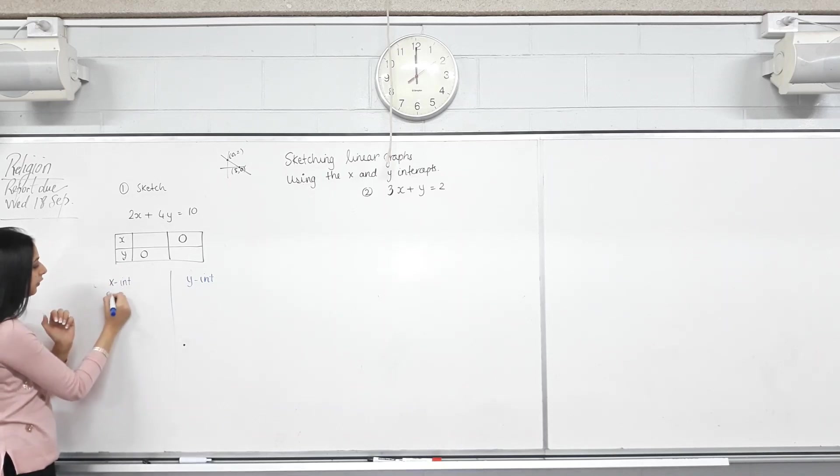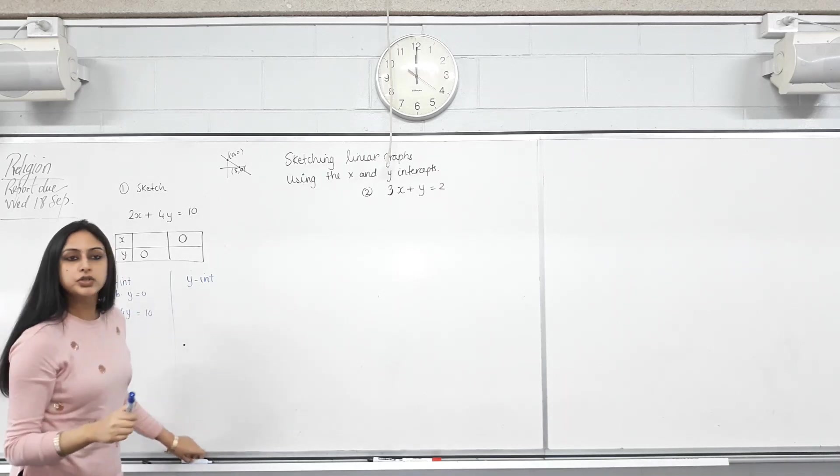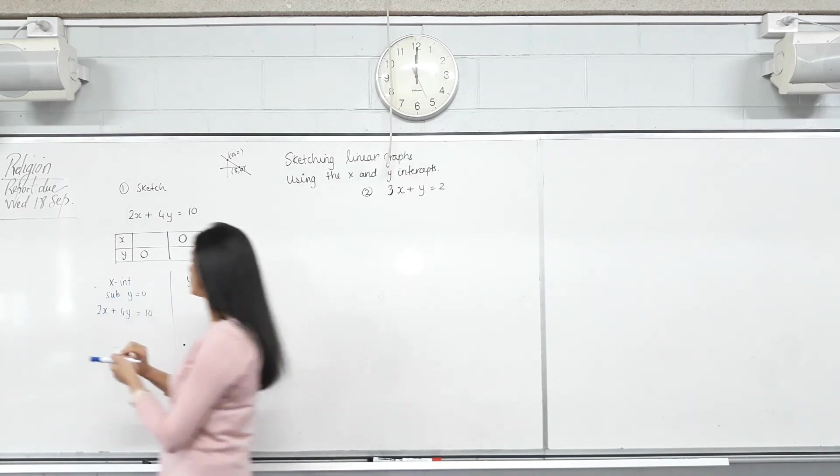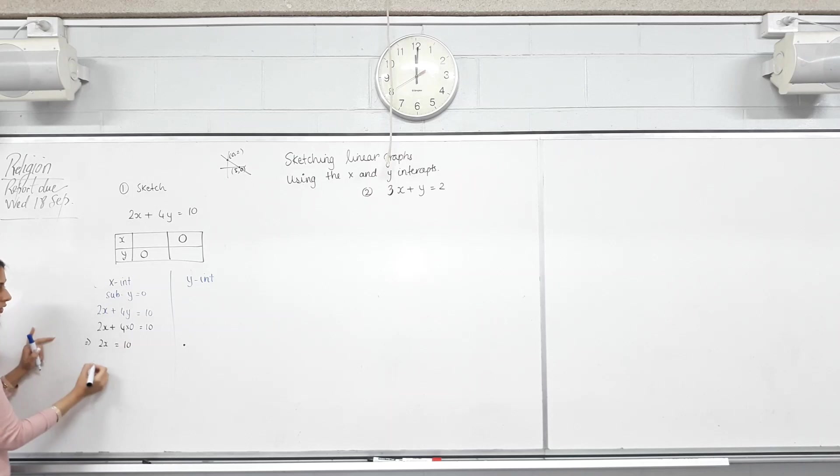So to find the X intercept, you write sub Y equals zero. Copy the equation first. So 2X plus 4Y equals 10. In this equation, wherever you see Y, you replace it with zero. Let's do that. So 2X plus 4Y means 4 times Y, so 4 times zero. What's 4 times zero? Zero. Can I divide both sides by 2? X will be equal to 5.